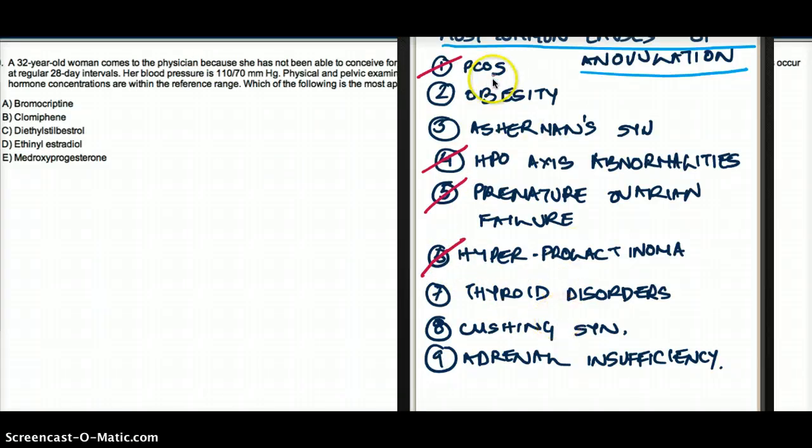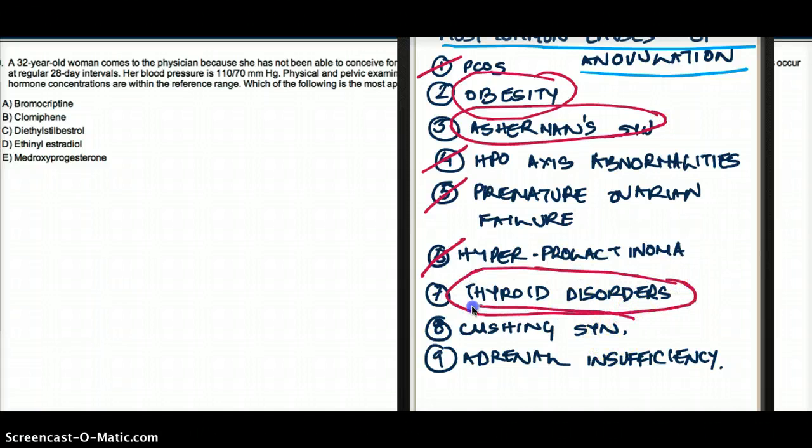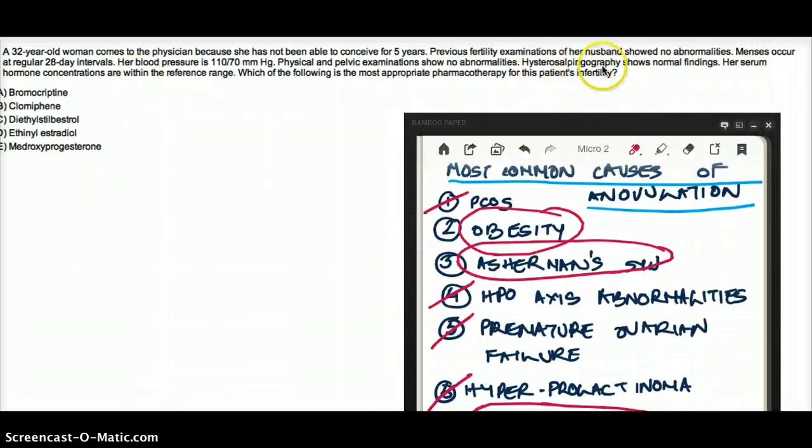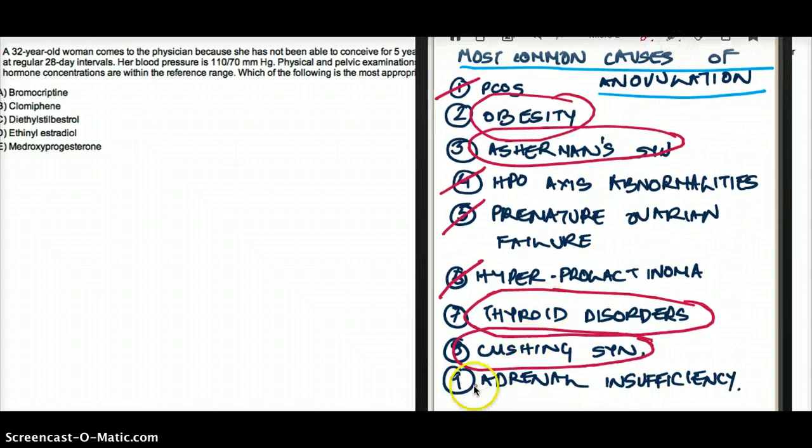Now we are left with obesity, Asherman syndrome, thyroid disorders, Cushing syndrome, and adrenal insufficiency. And let's say she was genetically a male but turned out to be a female, then we would see something in our physical exam. Hysterosalpingography would have showed some findings where we could have justified this to be the cause. So even that is ruled out.